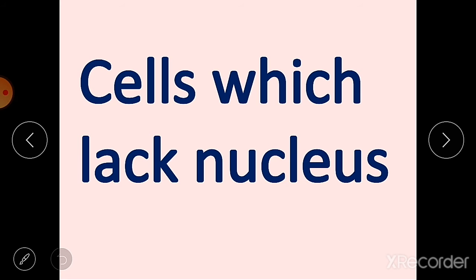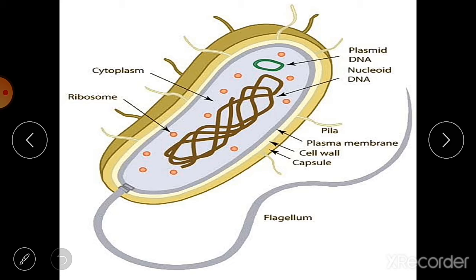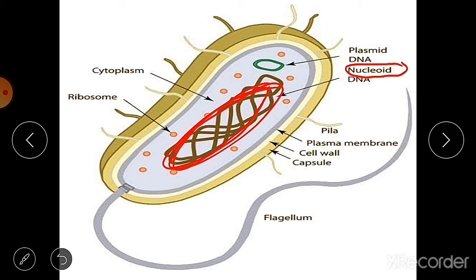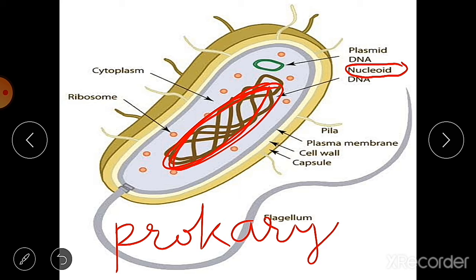Some cells lack a nucleus. In prokaryotic cells like bacteria, the nuclear region of the cell is poorly defined — there is no proper nucleus. Such an undefined nuclear region containing only nucleic acid is called the nucleoid. Organisms whose cells lack a nuclear membrane are called prokaryotic organisms. 'Pro' means primitive and 'karyote' means nucleus — so they have a primitive, undefined nucleus.